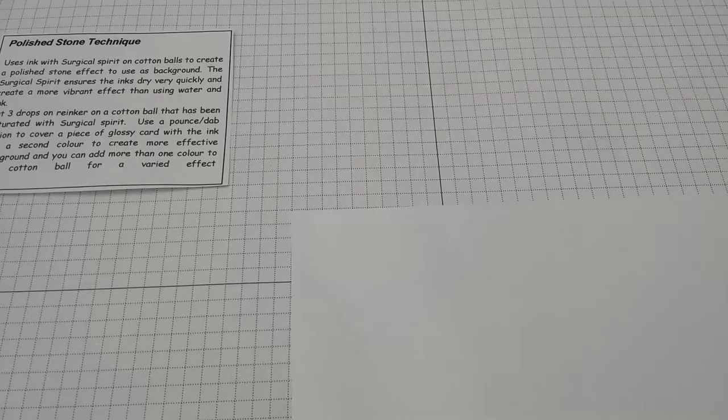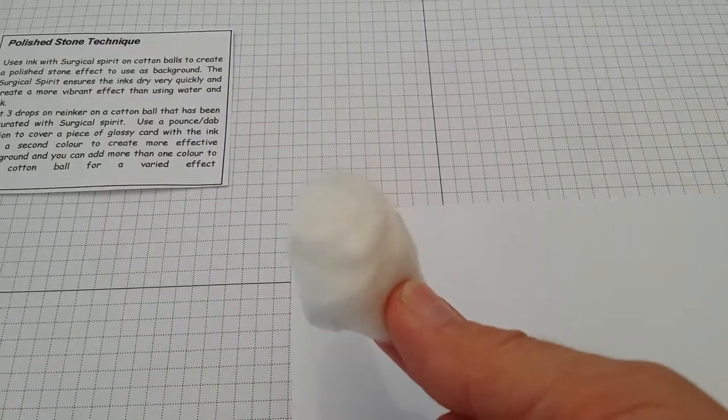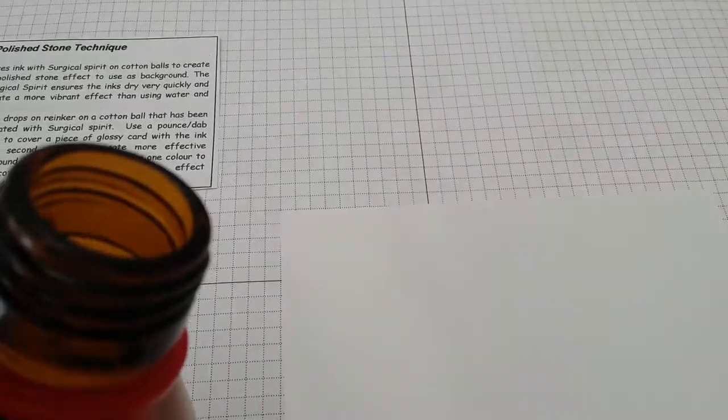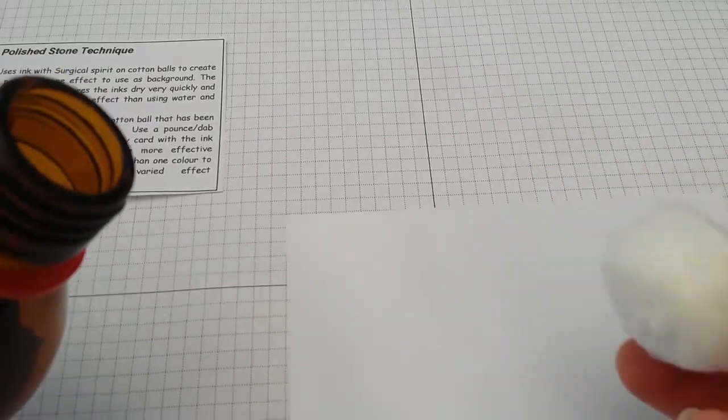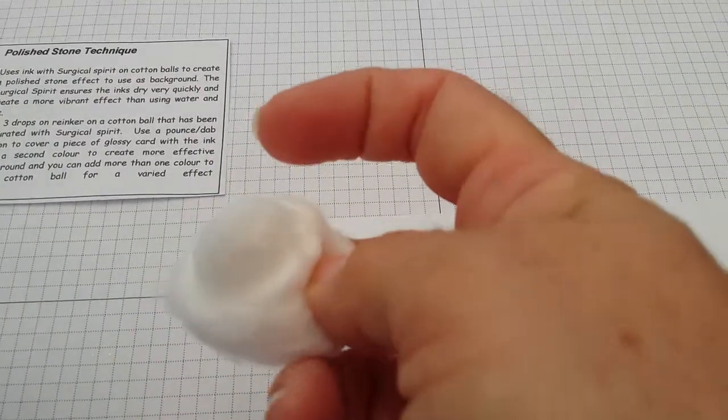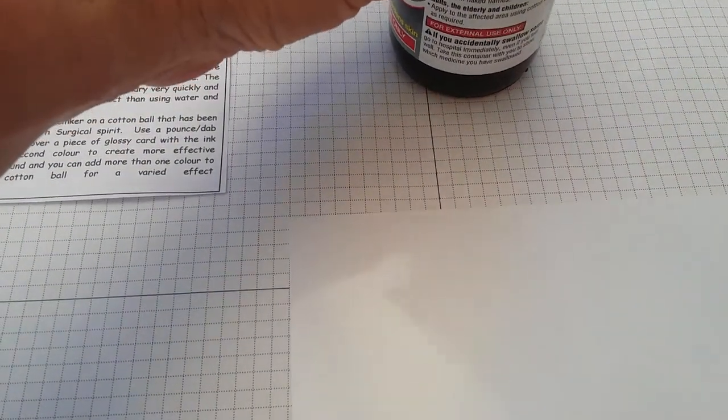So I'm going to just quickly show you how this technique works. I have a cotton ball and I'm going to just get the Surgical Spirit and tip it up and straight back so it's just this little bit here that's got the Surgical Spirit on. I'm just going to put the lid straight back on that.